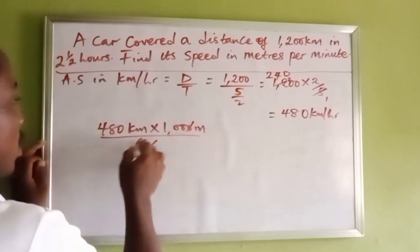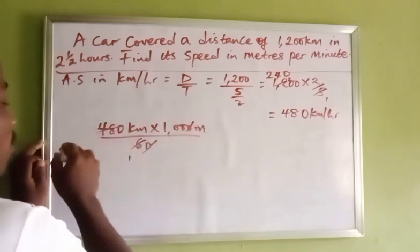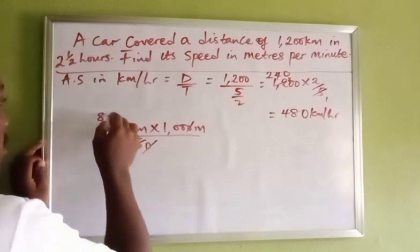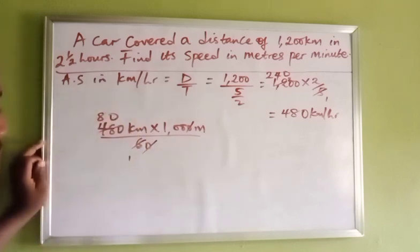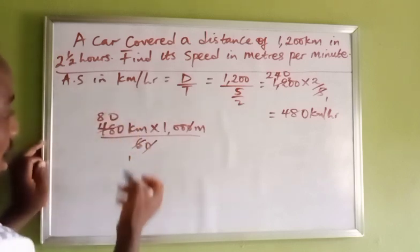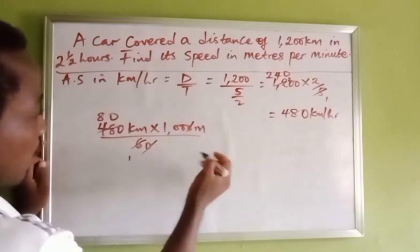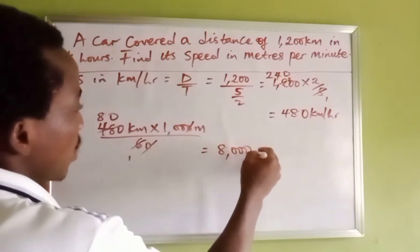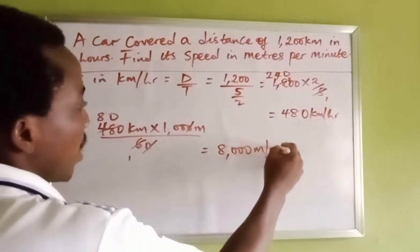Dividing: 6 into 48 is 8. Bring down the zero, that's 80. So 80 times 100 gives us 8,000 meters per minute.